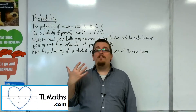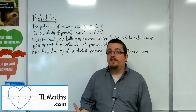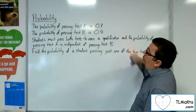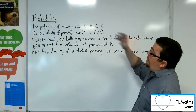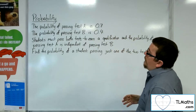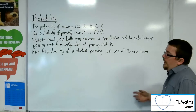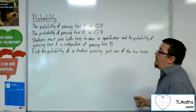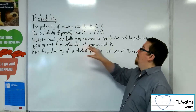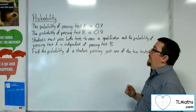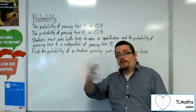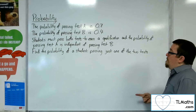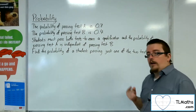In this video, I want to look at a basic probability tree diagram problem. We have two tests, A and B. We're told that the probability of passing test A is 0.7, the probability of passing test B is 0.4, and students must pass both tests to earn a qualification. The probability of passing test A is independent of passing test B. Find the probability of a student passing just one of the two tests.